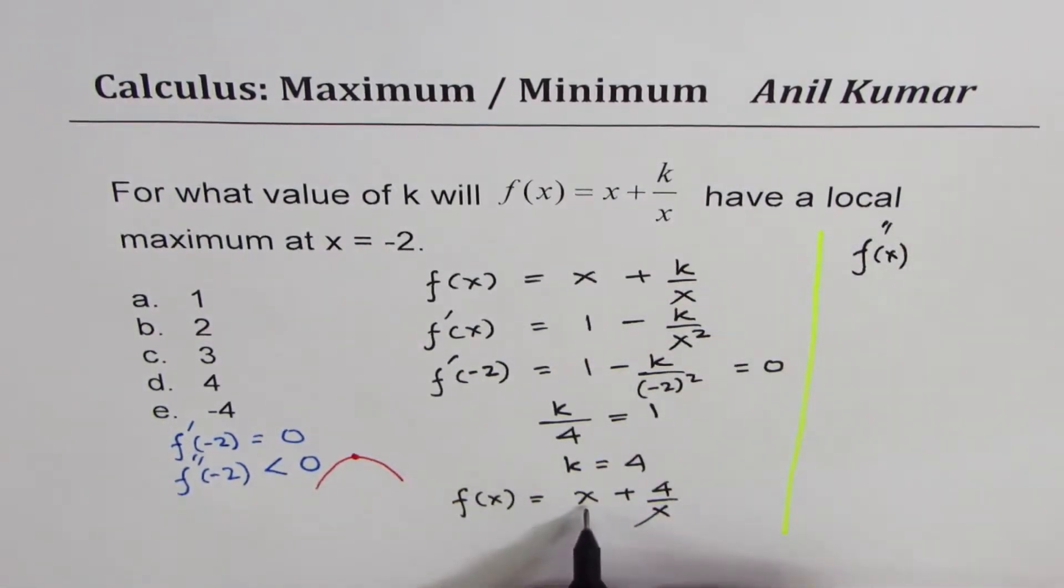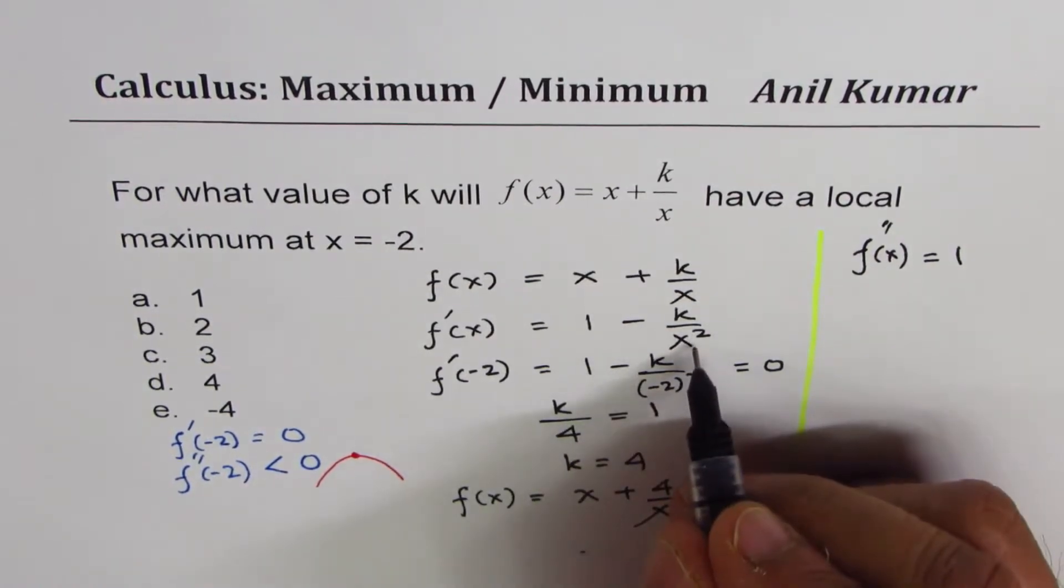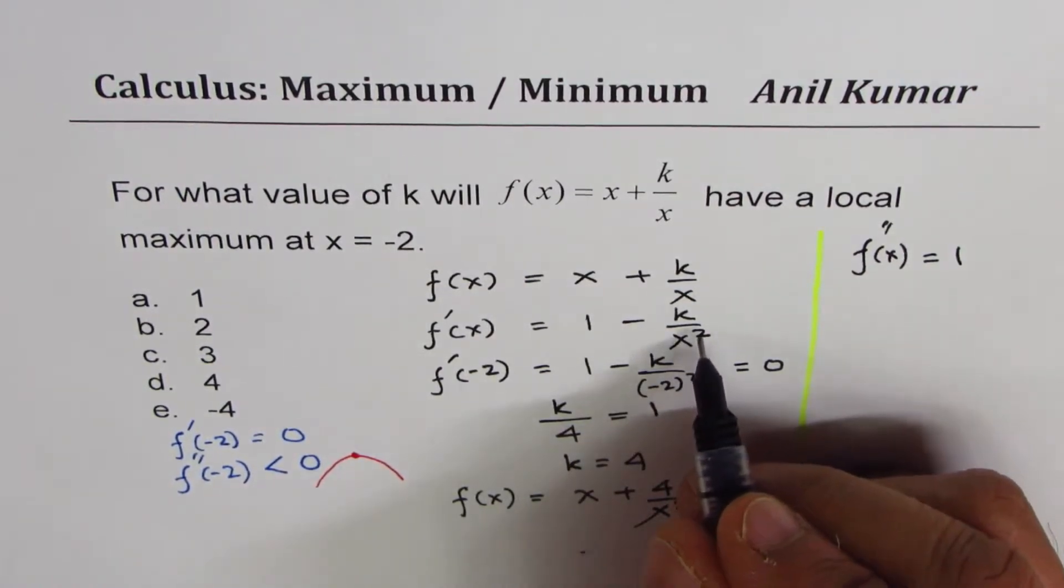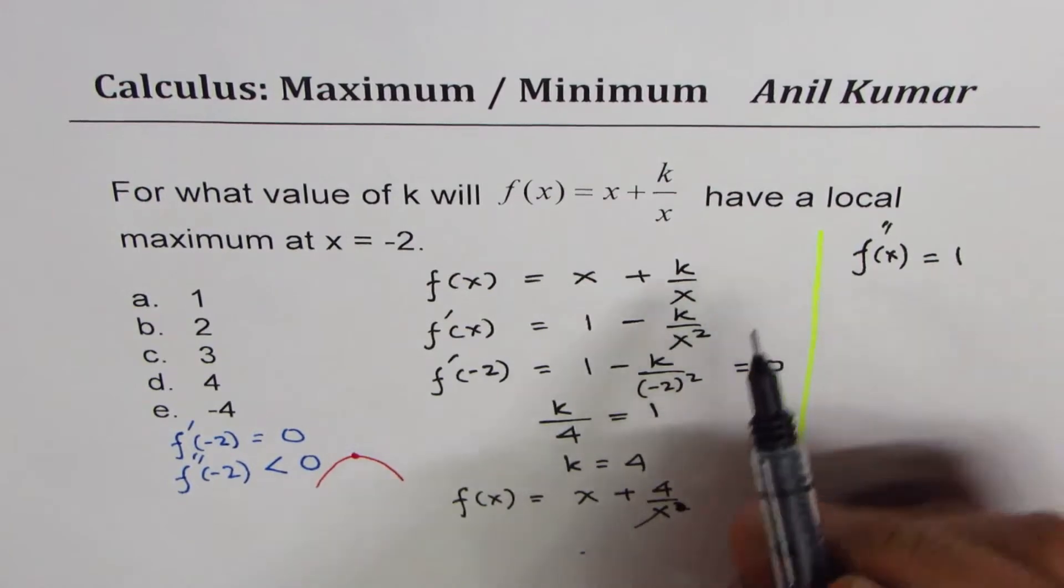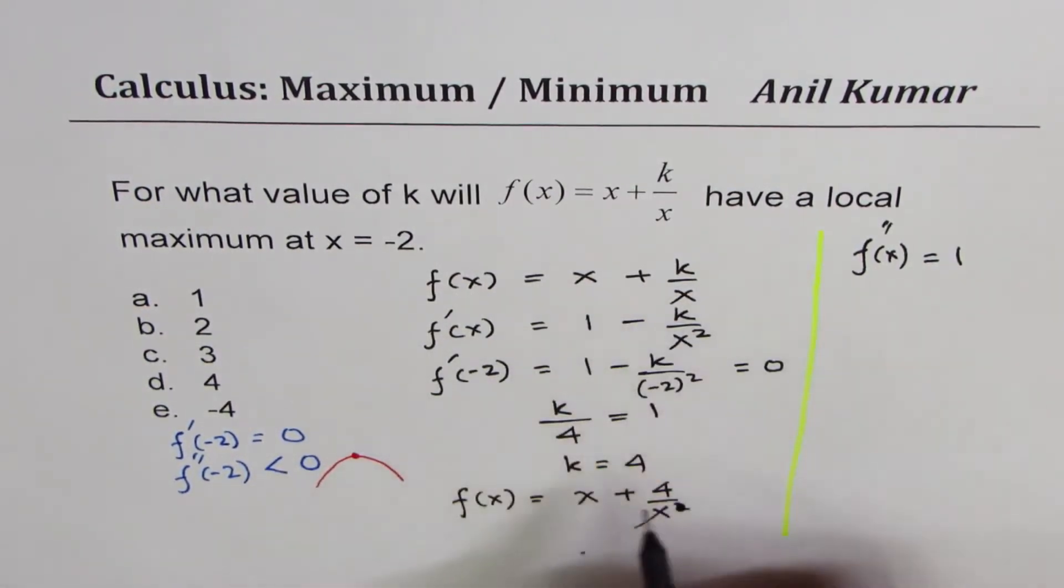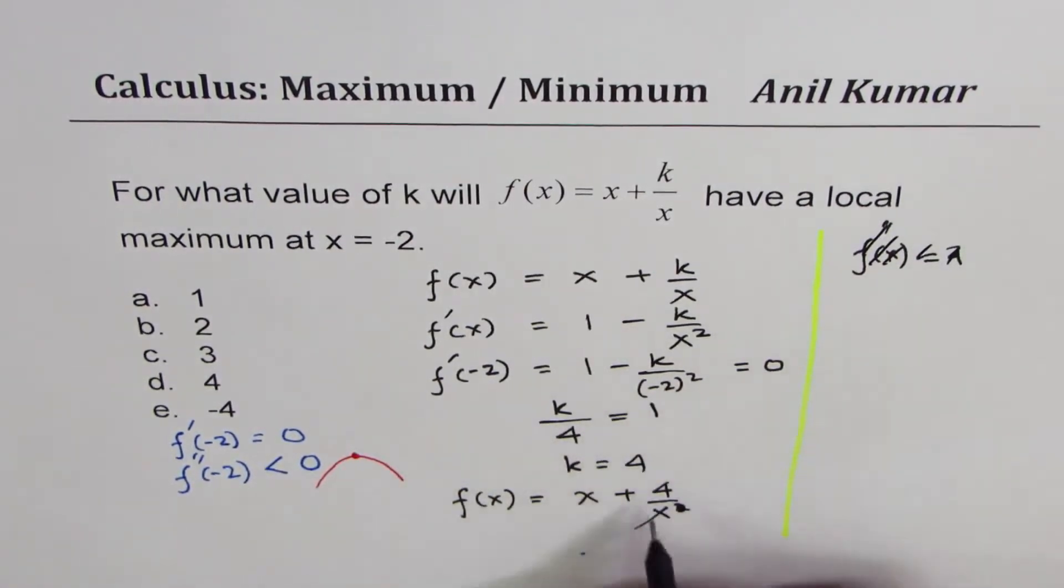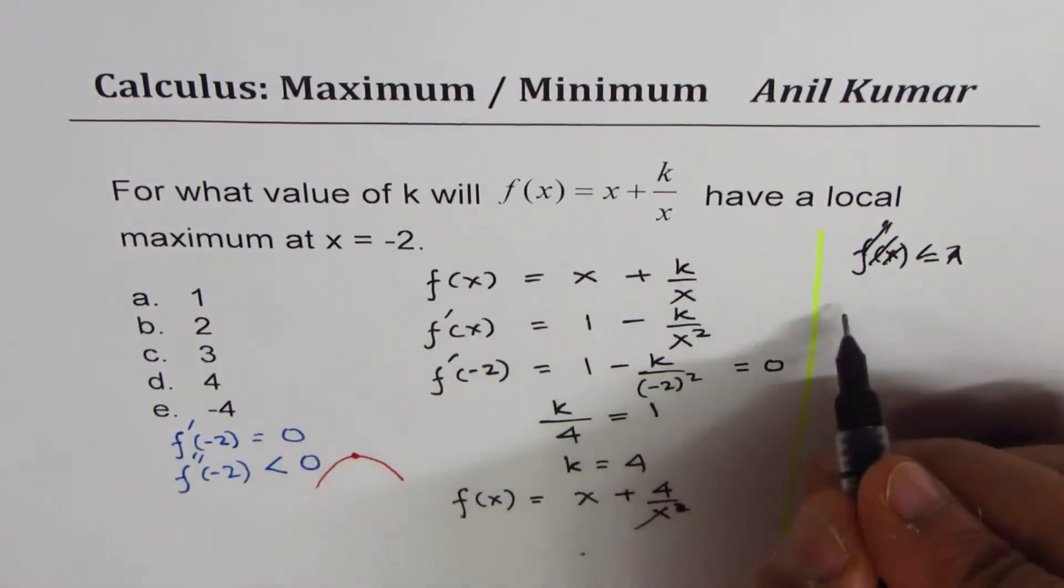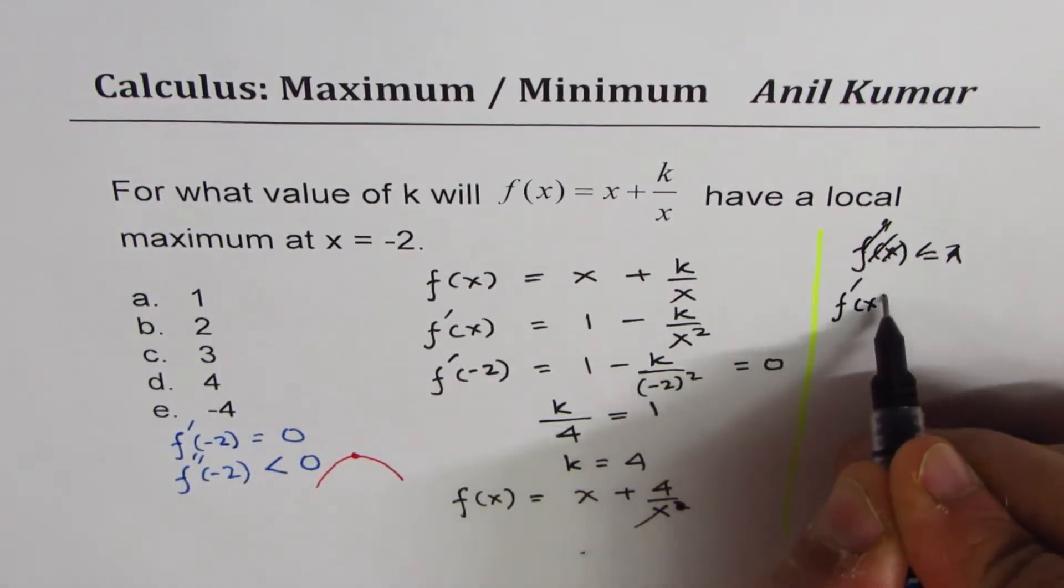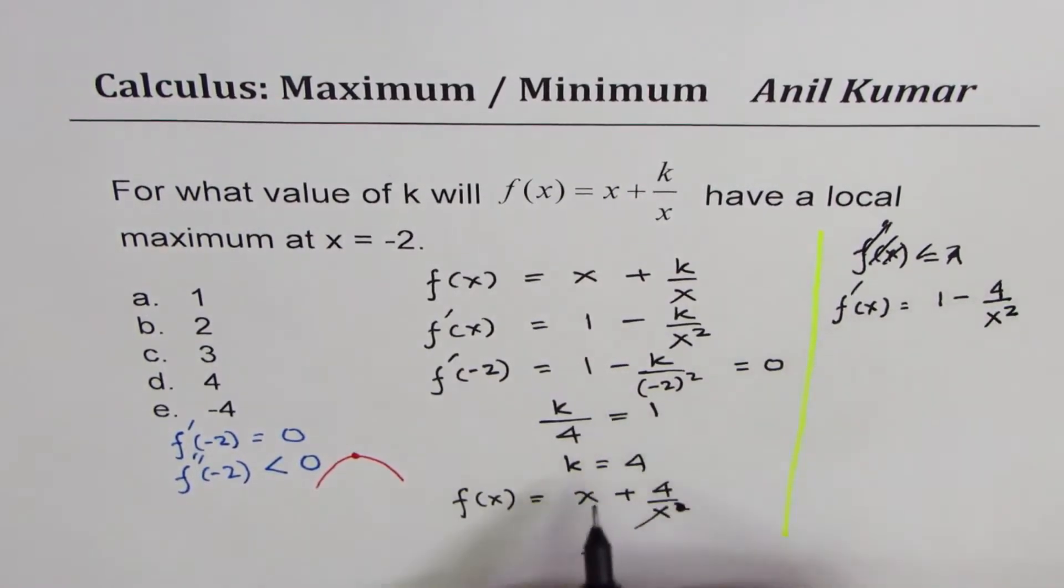Let me redo. The function is x + 4/x. The derivative is f'(x) = 1 - 4/x², because we have found k as 4.